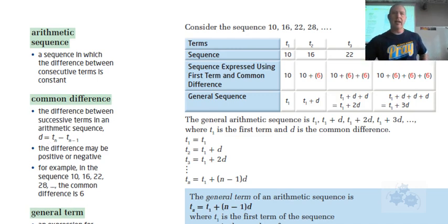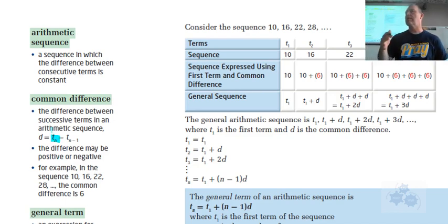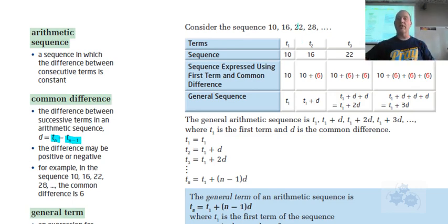We talked about the difference between the terms in a sequence, and that's called the common difference. It's given the symbol d, lowercase d. The common difference is the difference between any term in the sequence, and any given term is given the notation t sub n, t of n. That's just the nth term in the sequence. You take that term, and you subtract the term that was just before it, t of n minus one.